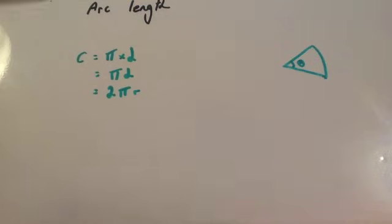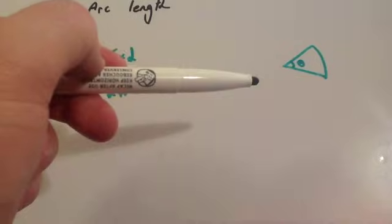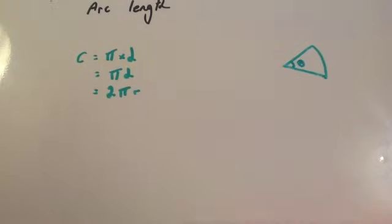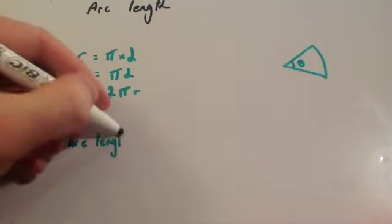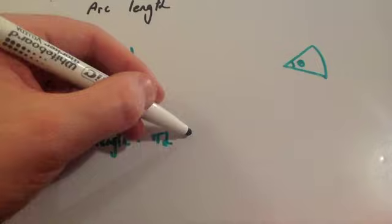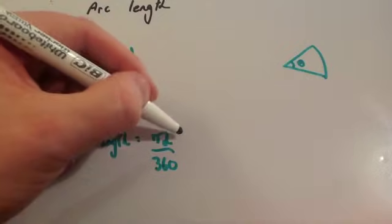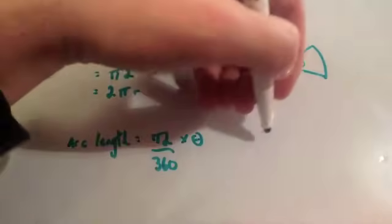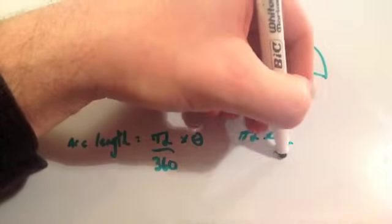To work out the arc length, you're going to work out the whole circumference of a circle, then divide it by 360 - that gives you 1/360th of the circumference - and then multiply by the angle you want. So arc length equals pi times diameter divided by 360, times by theta. Another way of writing that would be pi d times theta over 360.